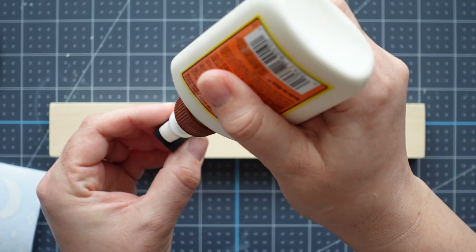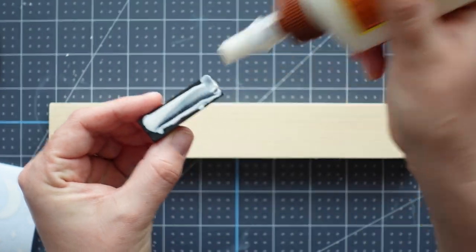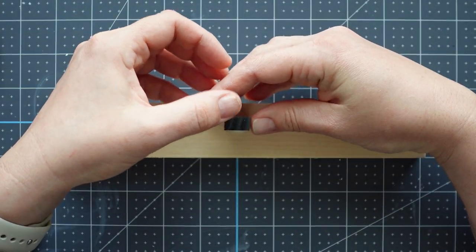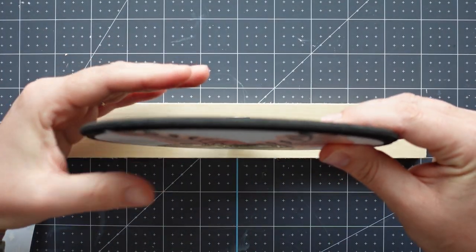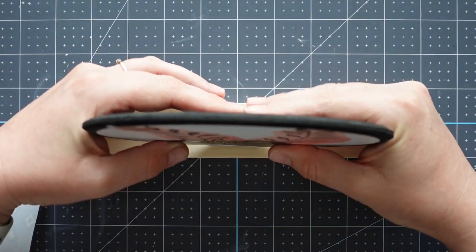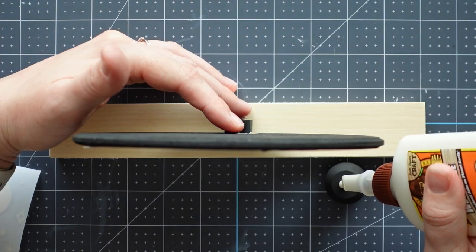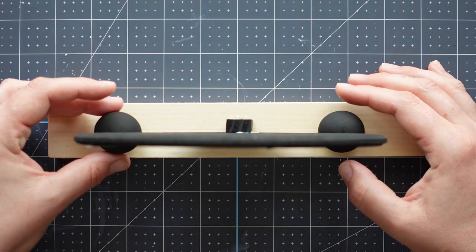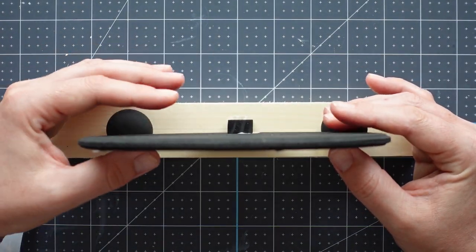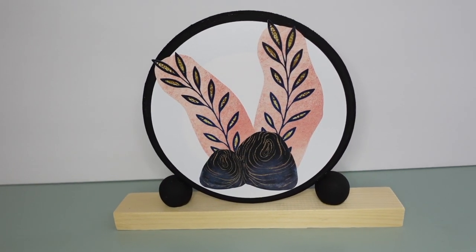Then it was time to assemble the pieces. I used wood glue to attach a tumbling tower block to the center of the base. I finished it off by attaching the circle to the block and gluing one sphere on each side of the circle. I think this one turned out pretty cute.